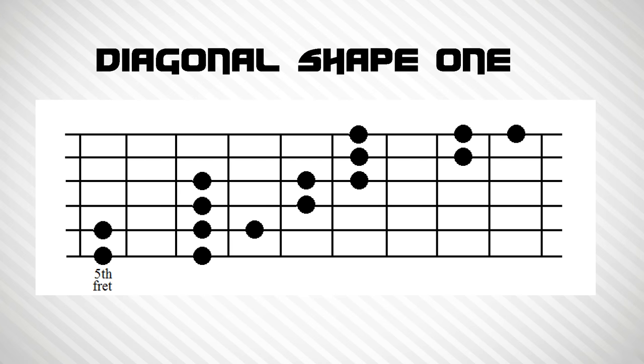Now let's move on to some diagonal shapes. This first one starts on fret number five, and it cuts diagonally across three different positions.